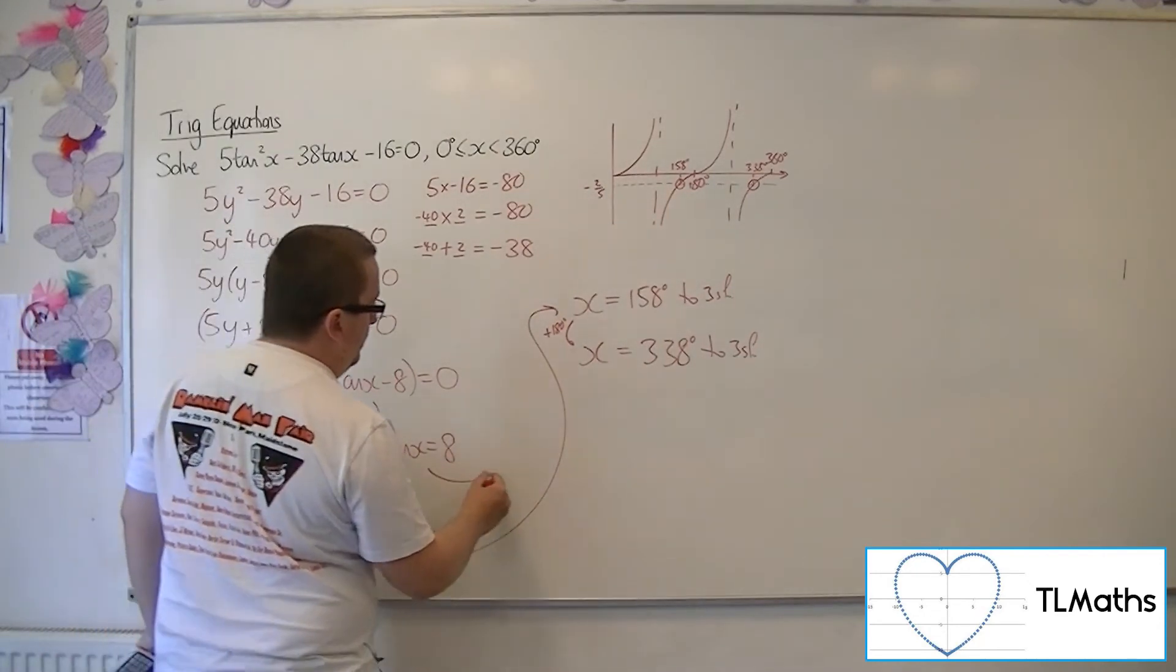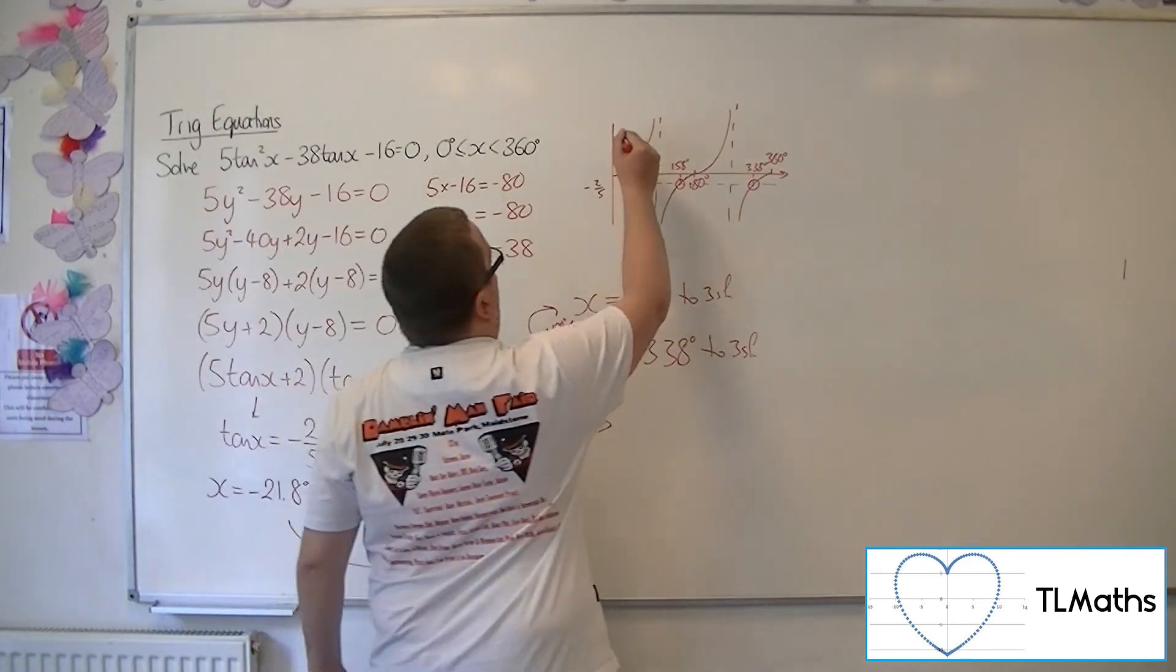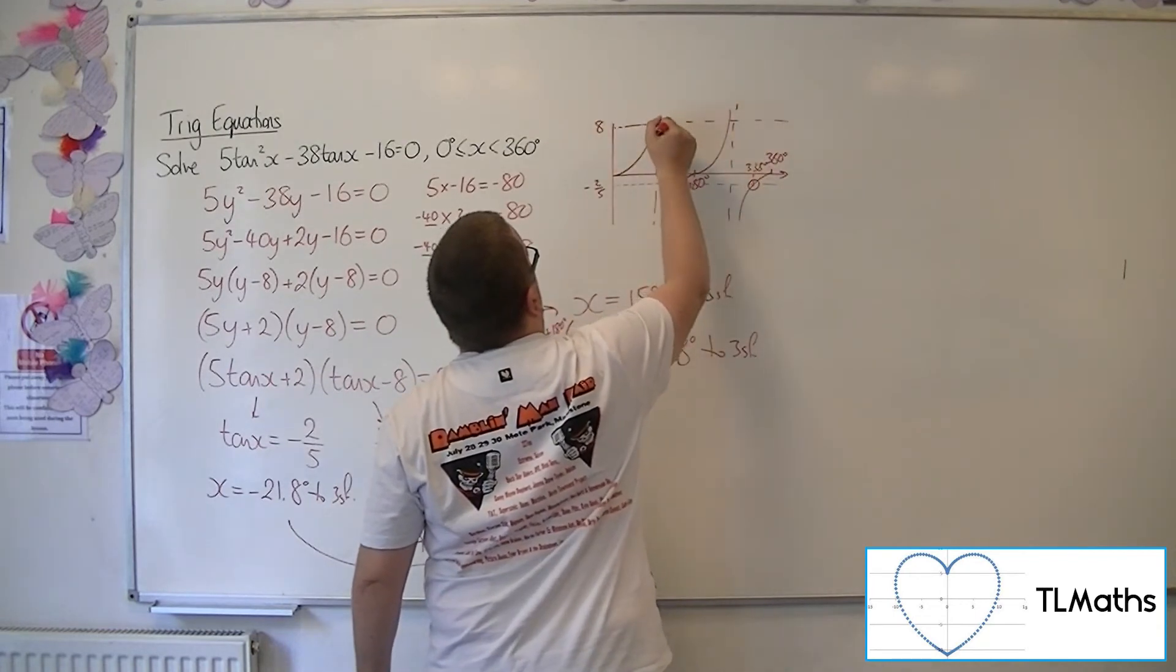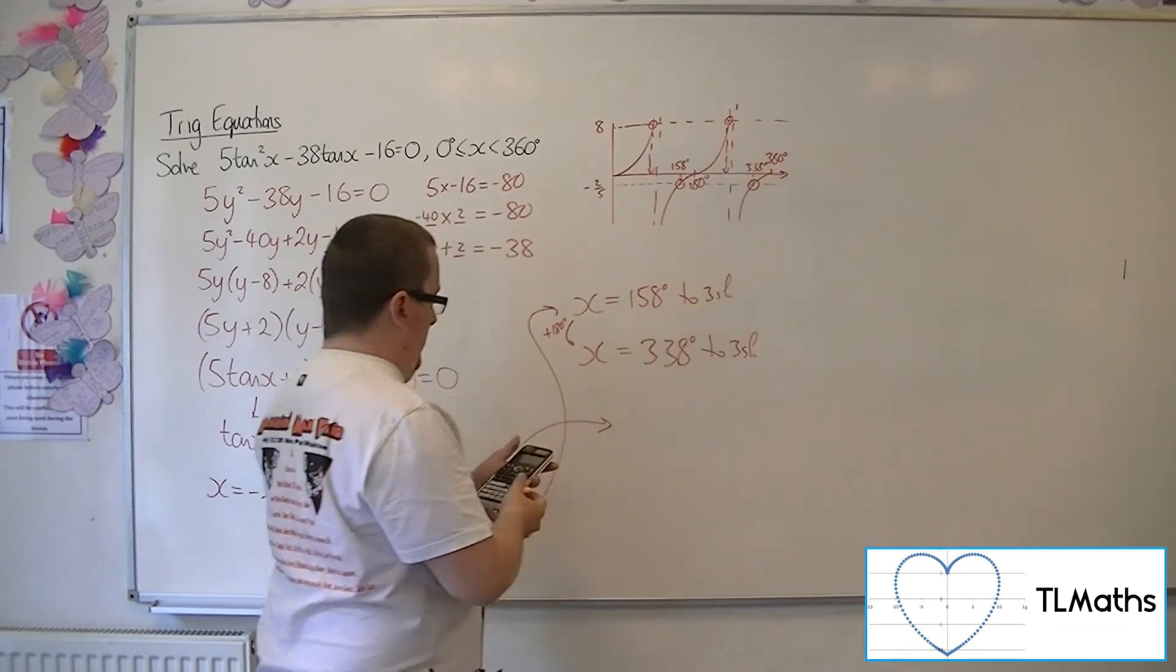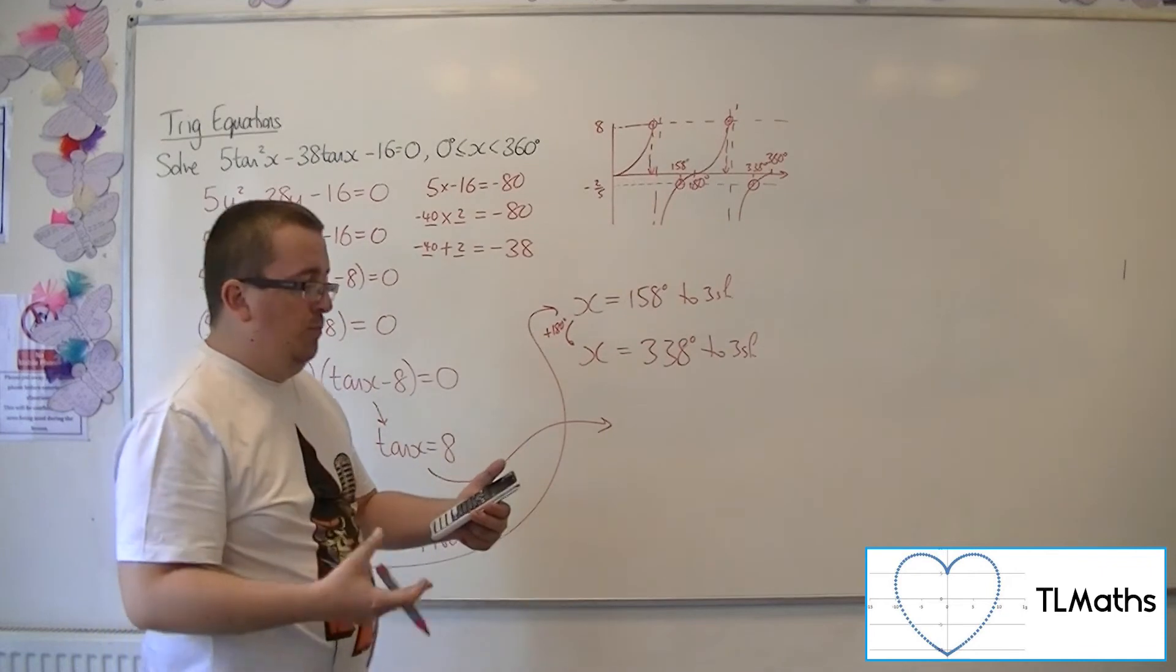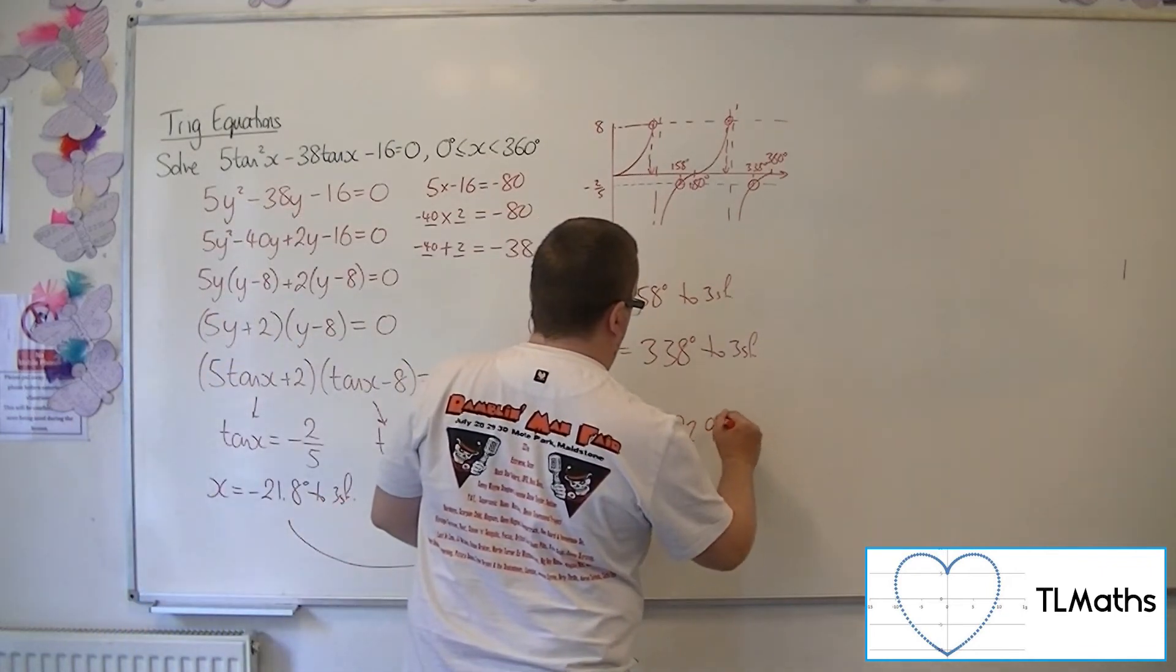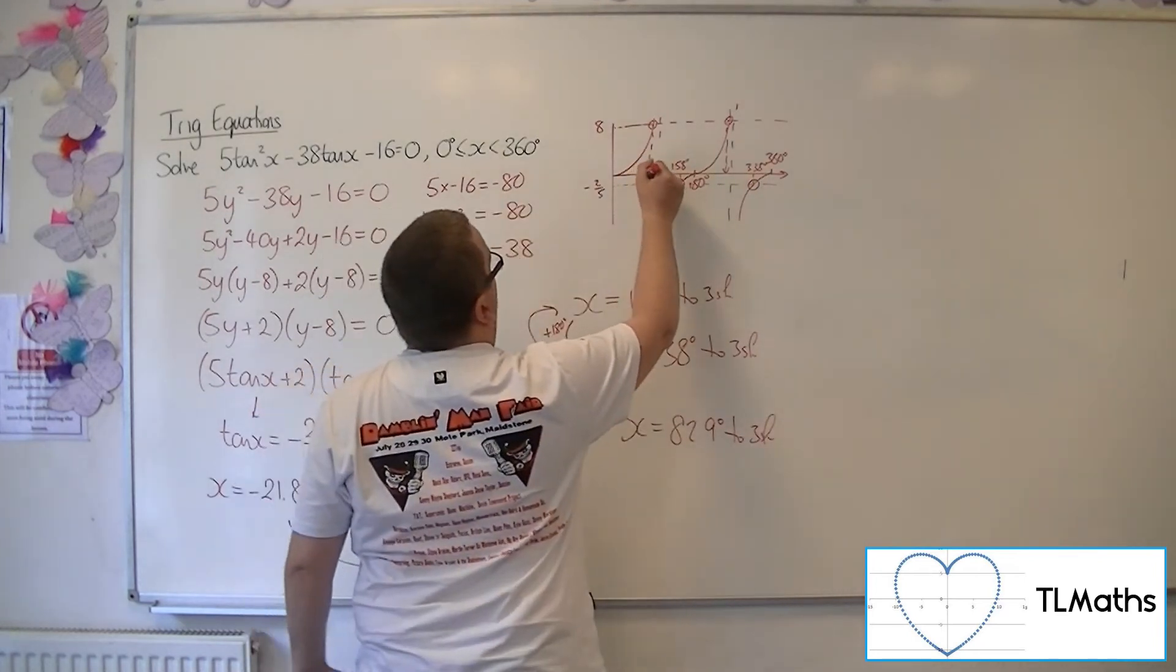Now, as for tan x equals 8, if I pop that on my diagram, 8's going to be way up here. And so I'd be expecting two solutions. So the first solution, inverse tan of 8, is 82.9. That's between 0 and 360, so that's that one there.